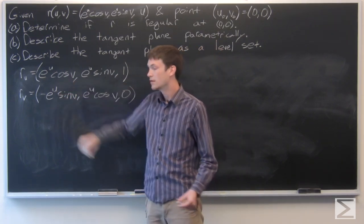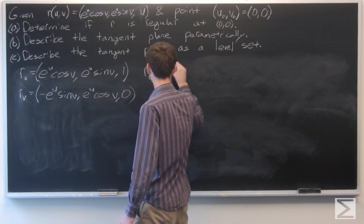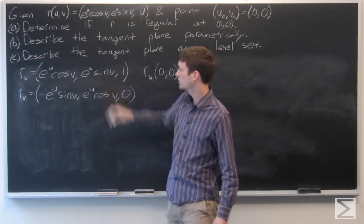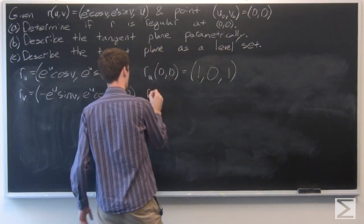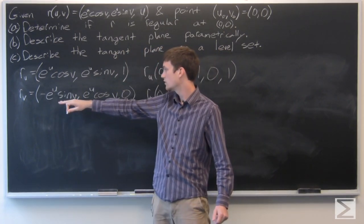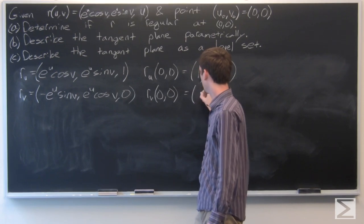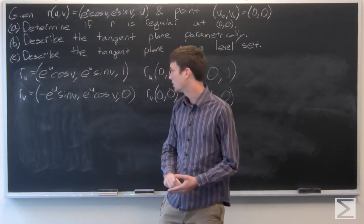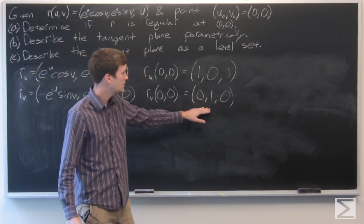We evaluate these partial derivatives at the point (0, 0). For r_u at (0, 0): cosine of 0 is 1, sine of 0 is 0, and the last component is 1 — so r_u = (1, 0, 1). For r_v at (0, 0): sine of 0 is 0, cosine of 0 is 1, and e^0 = 1 — so r_v = (0, 1, 0).